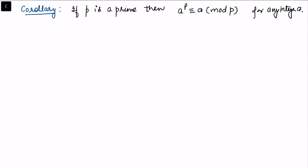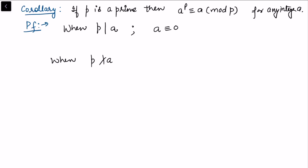A corollary follows: if p is a prime, then a^p ≡ a (mod p) for any integer a. To prove this, note that unlike the main theorem, we do not require the condition that p does not divide a. We consider two cases: when p divides a, and when p does not divide a.